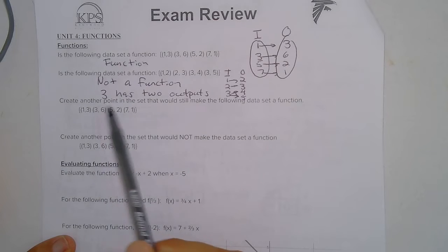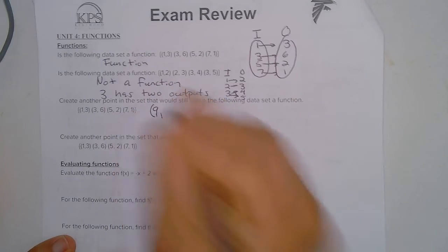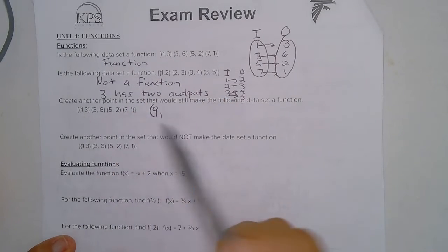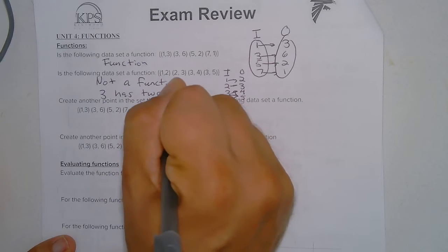So I notice the inputs go 1, 3, 5, 7. So I'm going to add and continue with that pattern and go 9. And then it can output to any point that we want. So I'm going to go 9 outputs to 16.